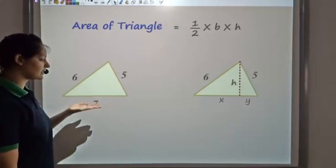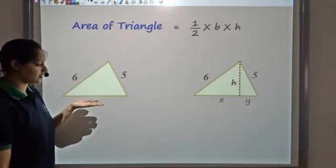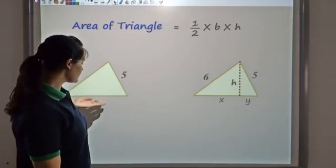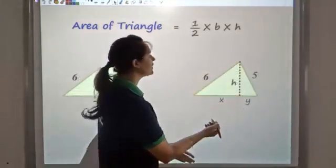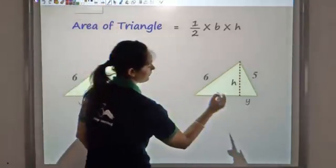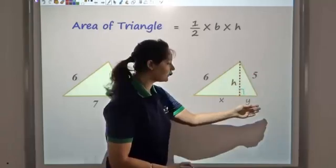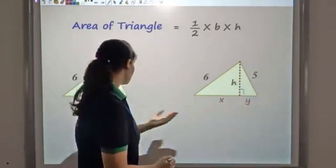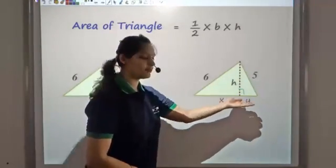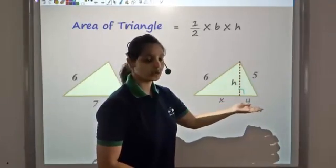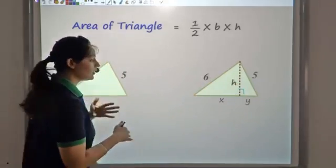Base is fine — I can take any side as the base. Say I take the bottom-most side as the base, which is 7. Now if this is my base, what would the height be? Even if I apply Pythagoras theorem, I know that height is perpendicular, but here I cannot apply Pythagoras because both sides are unknown. I know x plus y would give me 7 — it can be 4 and 3, or 5 and 2. So it is really complicated.